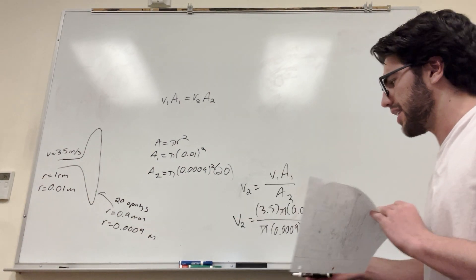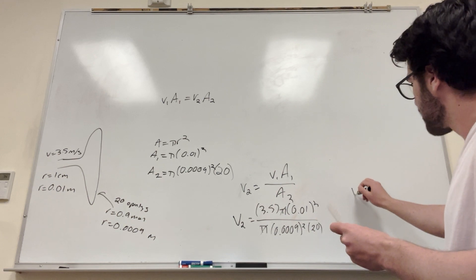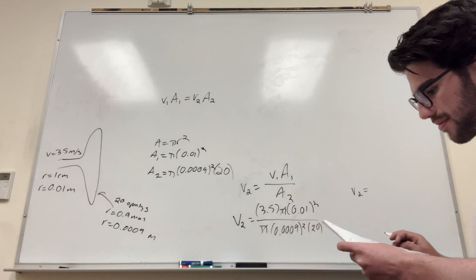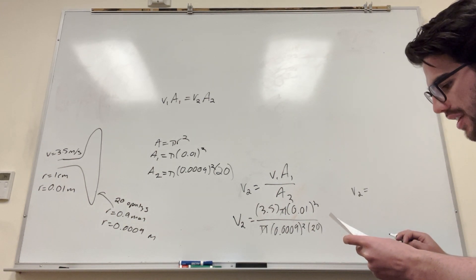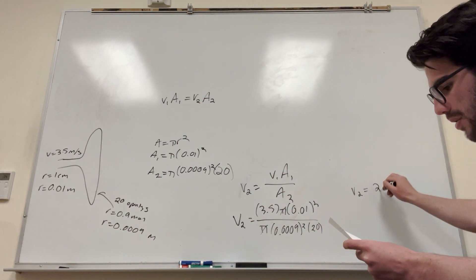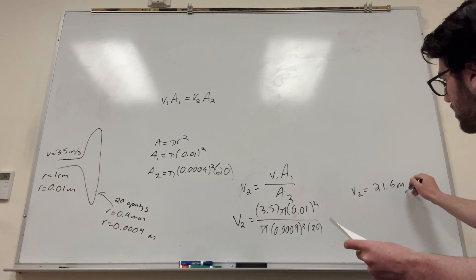0.0009 squared times 20. And you plug this in your calculator to get an answer. Yes, let me make sure I did all this right. So this is going to be 21.6 meters a second. Or I think the book has it as 22 meters a second.